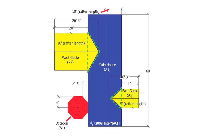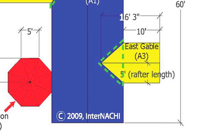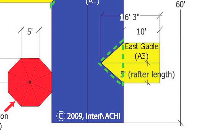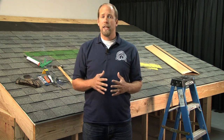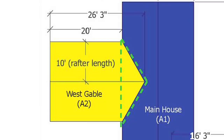Now let's look at the yellow shapes. The area of the east gable, A3, is the addition of two trapezoids. We know the area of a trapezoid is base one plus base two times height times one half. For this house, the east gable A3 is sixteen feet three inches plus ten, times five for height, times one half. Because there are two trapezoids, you double that amount to get the total square footage of the east gable roof. The west gable roof is measured the same way — calculate the area of one trapezoid and double it.